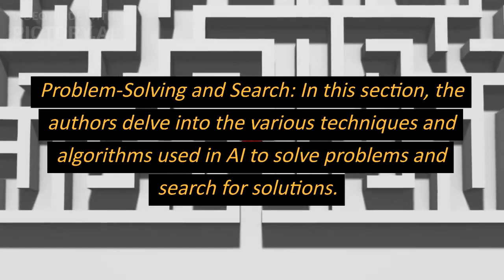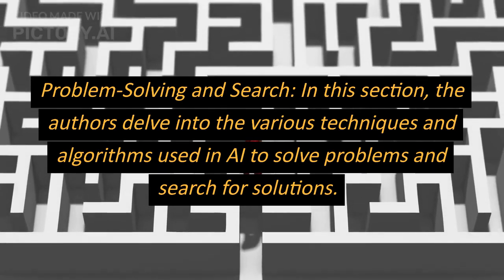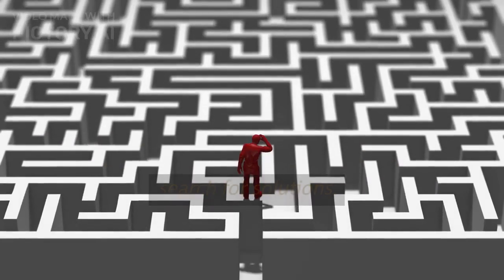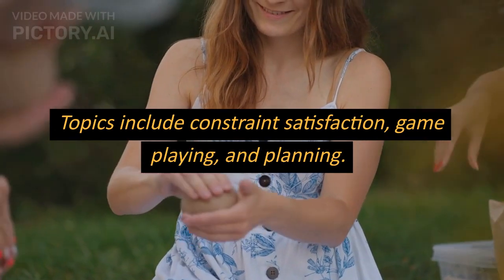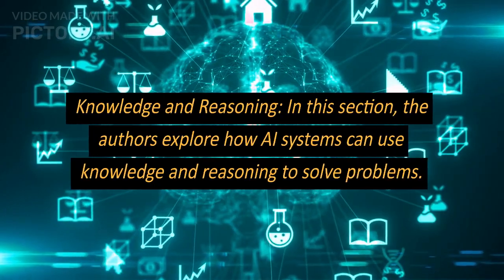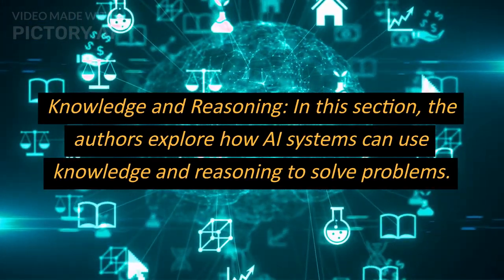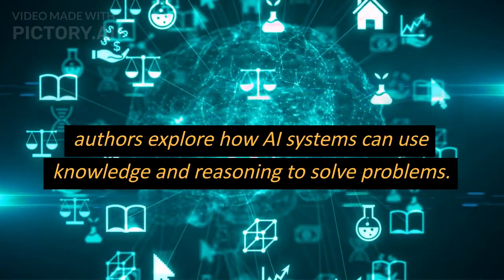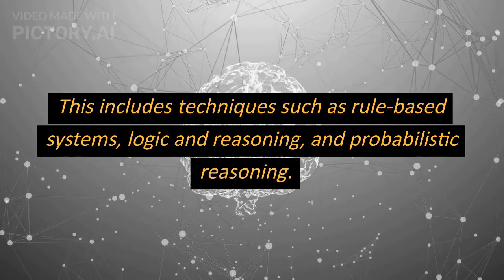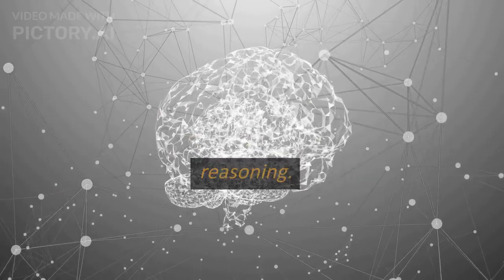The second part, Problem-Solving and Search, delves into the various techniques and algorithms used in AI to solve problems and search for solutions. Topics include constraint satisfaction, game playing, and planning. The third part, Knowledge and Reasoning, explores how AI systems can use knowledge and reasoning to solve problems, including techniques such as rule-based systems, logic and reasoning, and probabilistic reasoning.